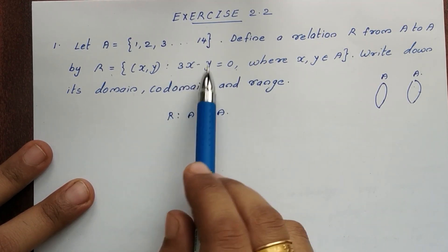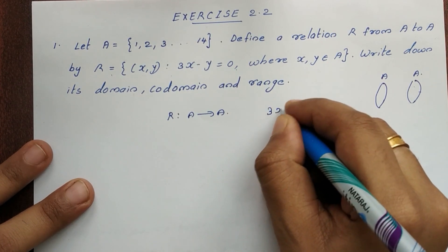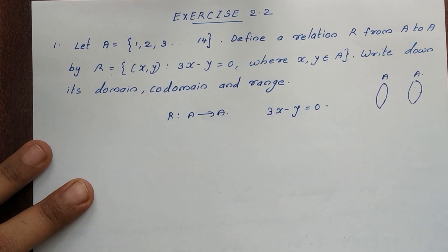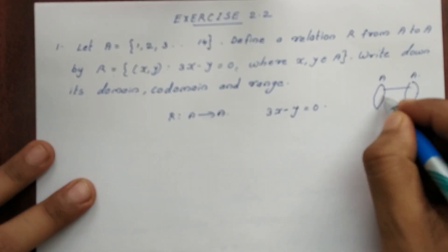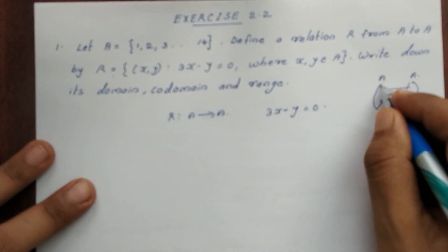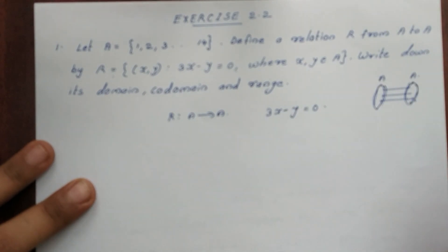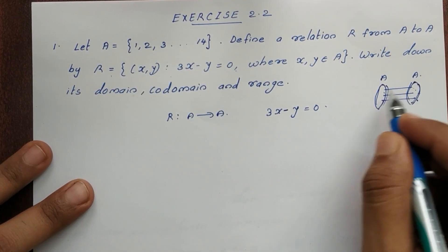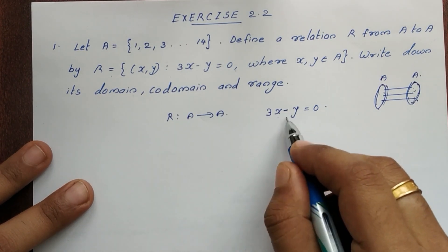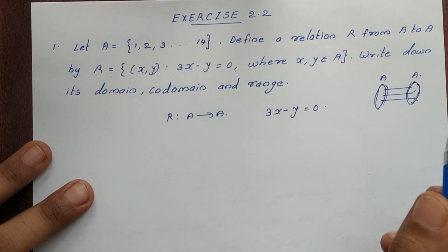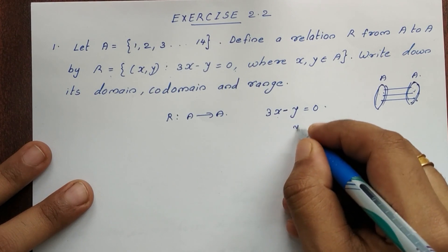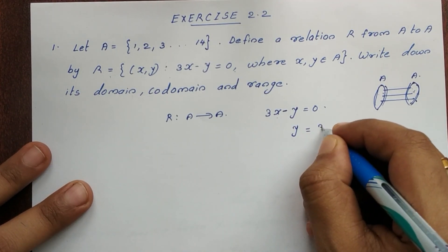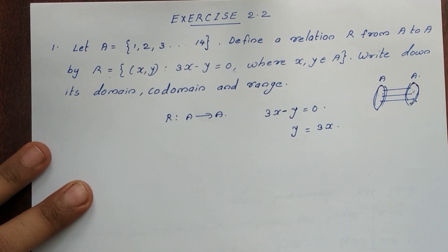The condition is 3x minus y equals 0. So y is equal to 3x. We substitute values of x from set A into this relation. For each value of x, the corresponding y value must also belong to A.